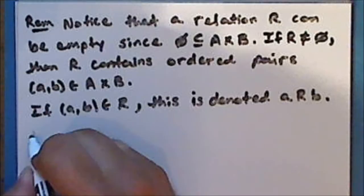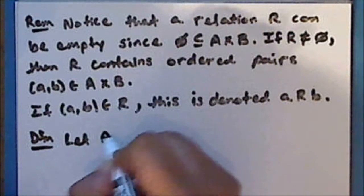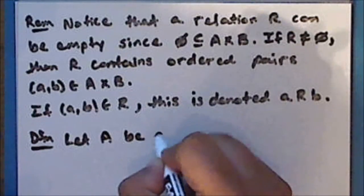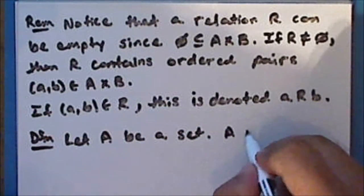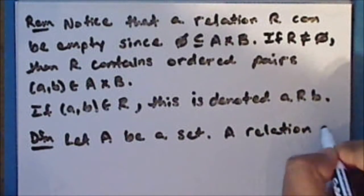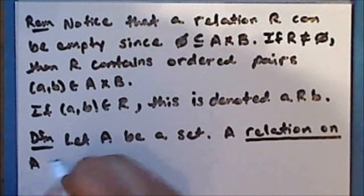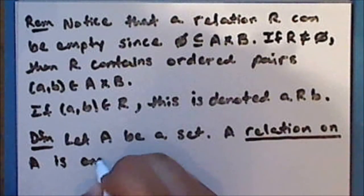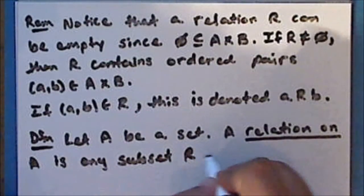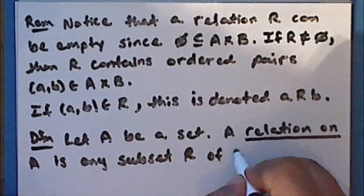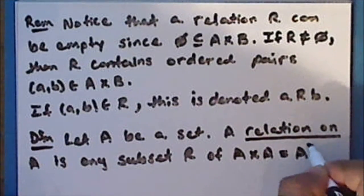New definition: let A be a set. A relation on the set A is any subset R of the Cartesian product A cross A, which we denote as A squared.